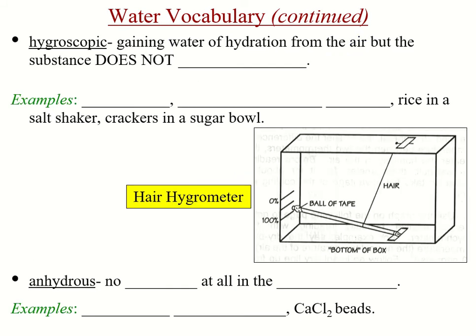Hygroscopic is the gaining of water of hydration from the air, but the substance does not dissolve. Examples include hair, decorating paper, rice in a salt shaker, and crackers in a sugar bowl.